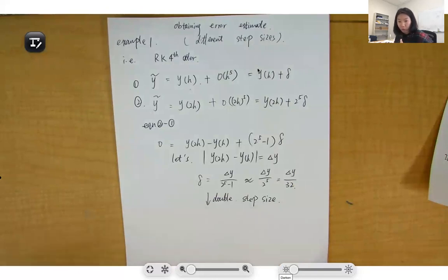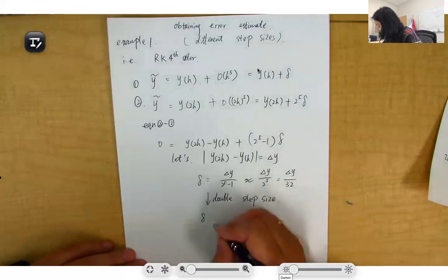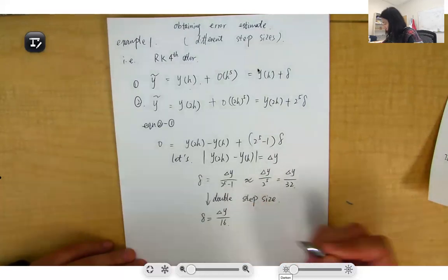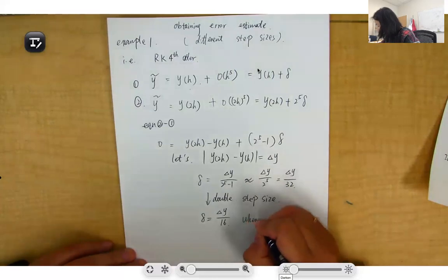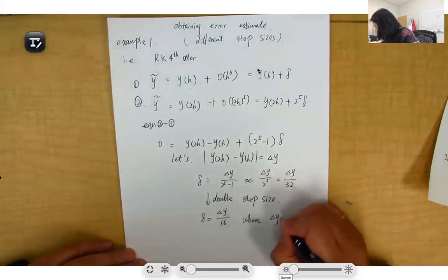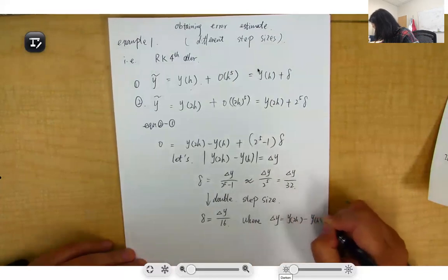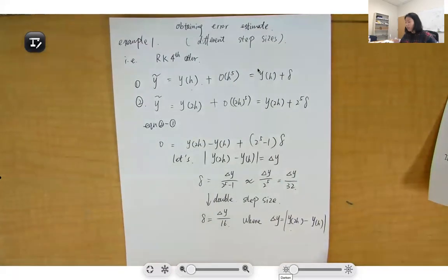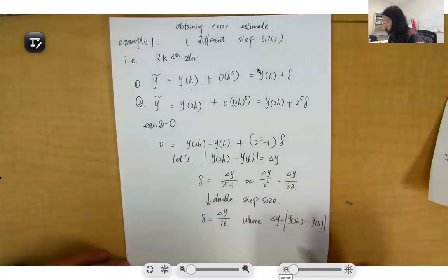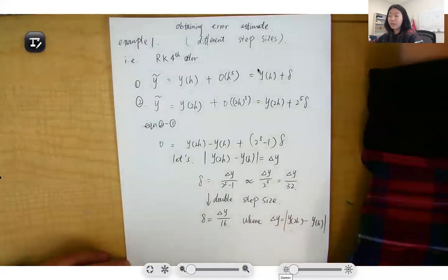So the local σ will be Δy divided by 16, where Δy equals y_2h minus y_h. So this is the local error estimate using different step sizes.